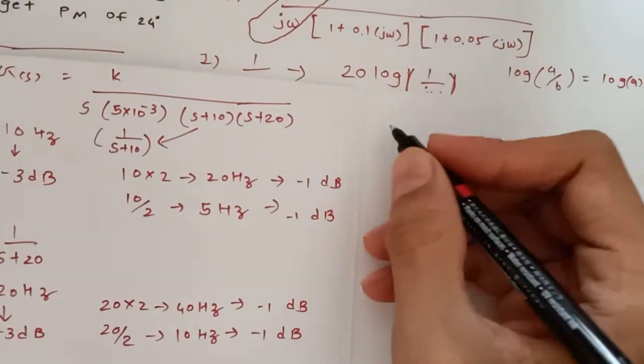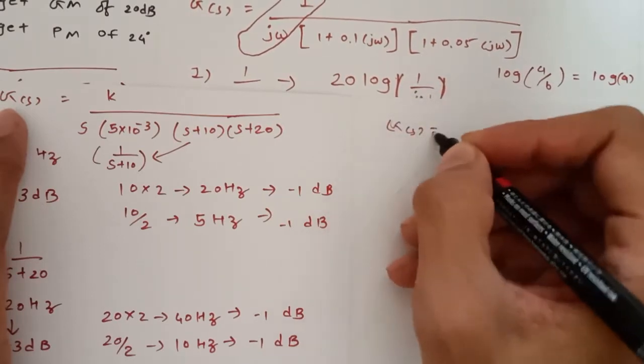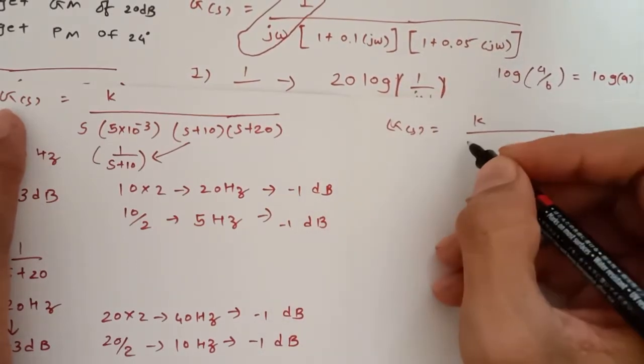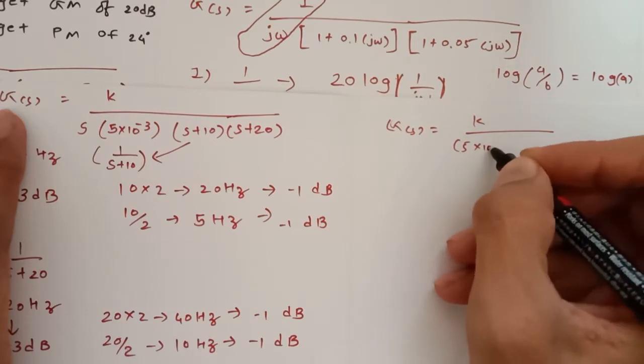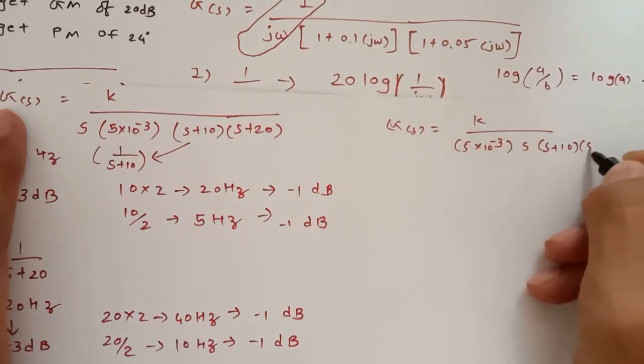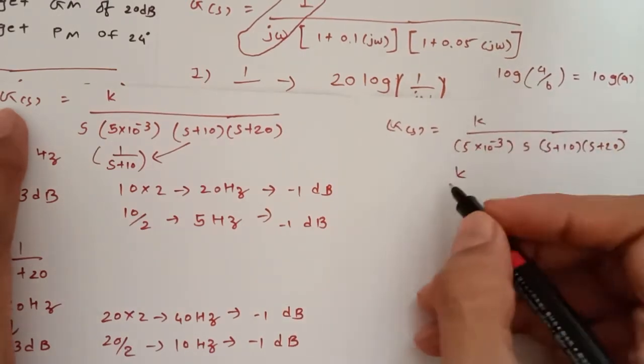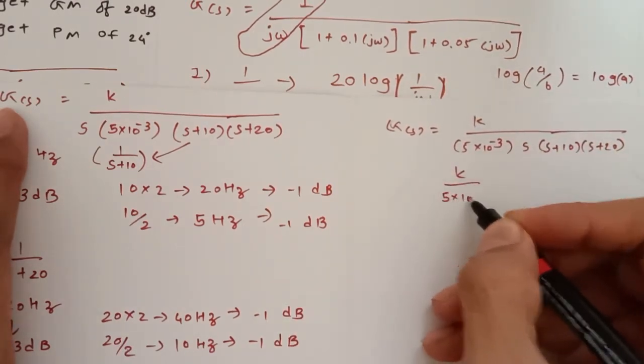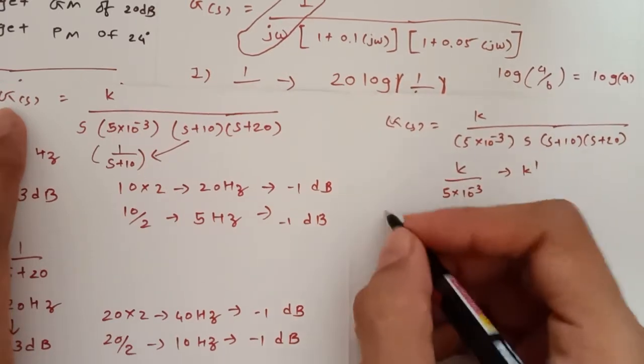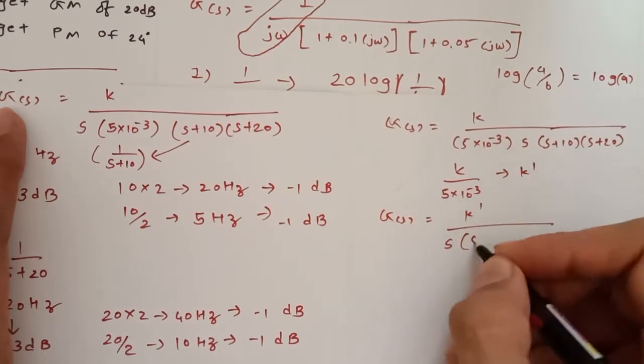Now start phase plot. You can see this transfer function G(s) is equal to k upon 5 into 10 raised to minus 3 s(s+10)(s+20). If I consider k upon 5 into 10 raised to minus 3 is equal to k dash, then G(s) is equal to k dash upon s(s+10)(s+20).